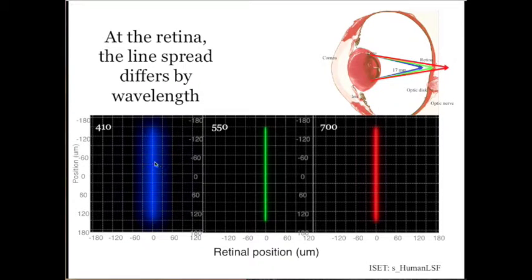And at the same moment that the short wavelength light is spread that far, the middle wavelength light, the greenish light, is nice and compressed. It's compact. And the long wavelength light, which is focused behind, is less compressed. It's spread out a little bit more.